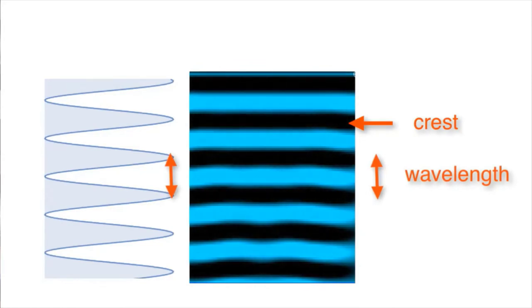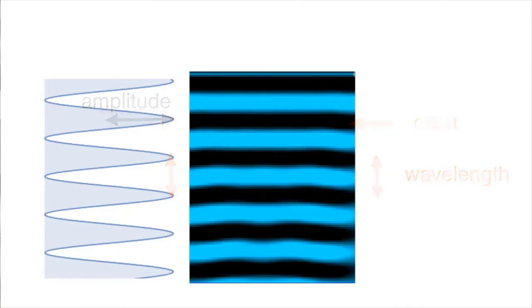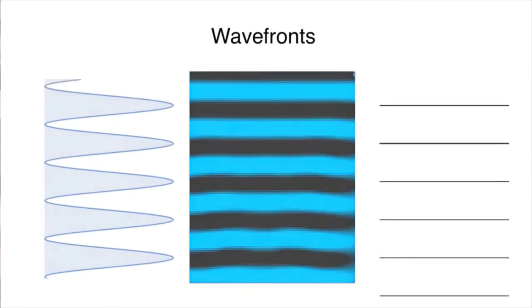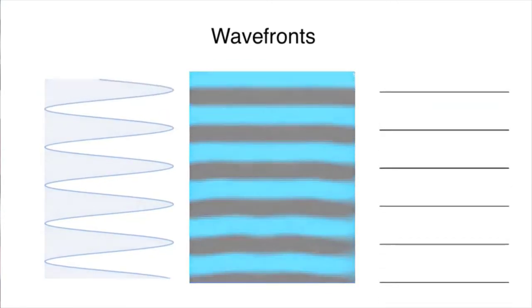Because this is a projection of a wave onto two dimensions, we cannot distinguish the amplitude or height of the wave. The lines are referred to as wave fronts. Wave fronts will be helpful when we look at how waves interact with walls and objects.